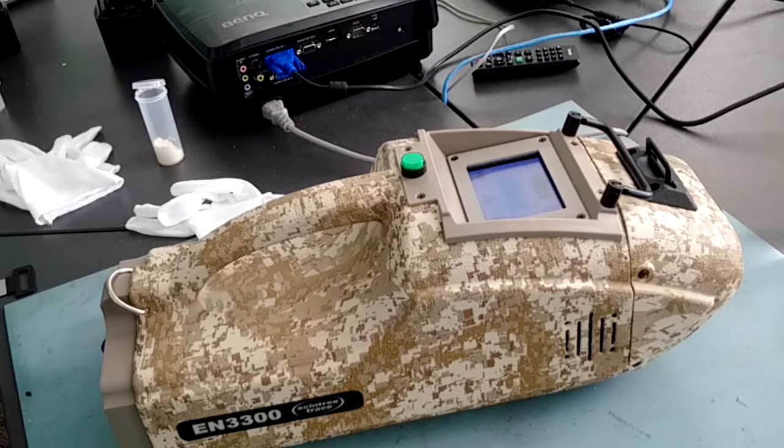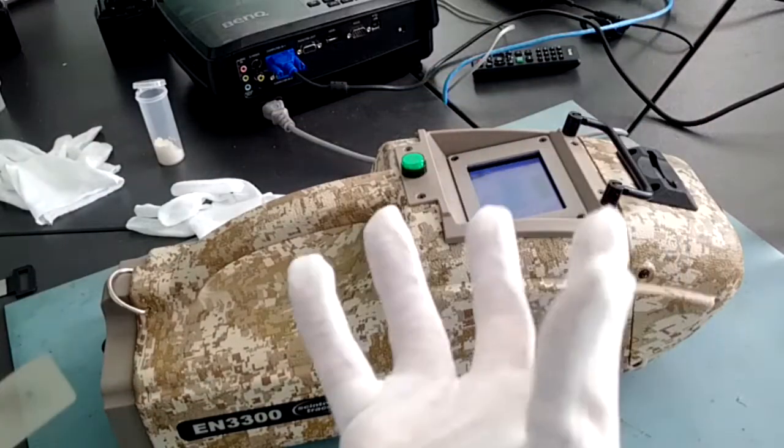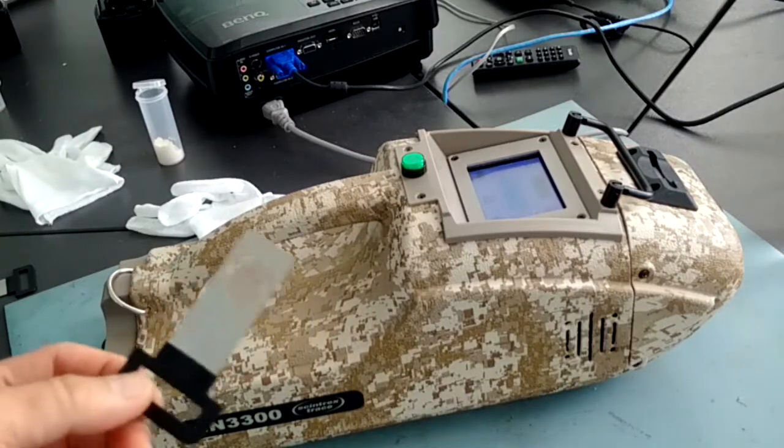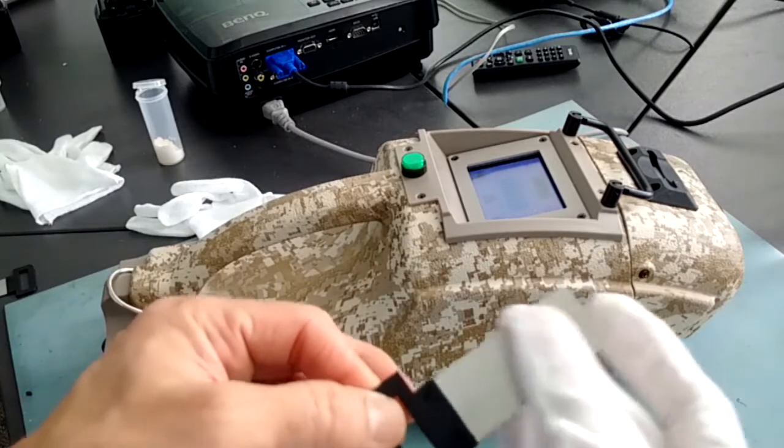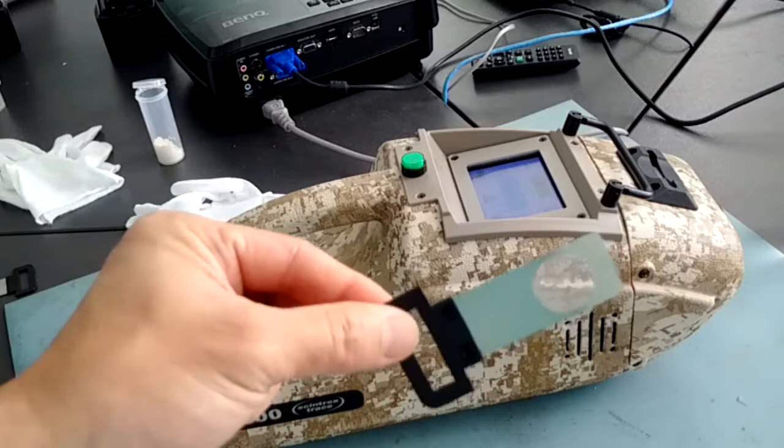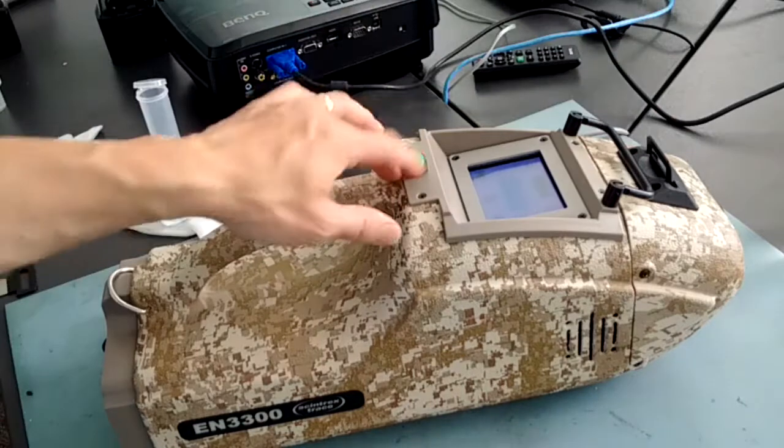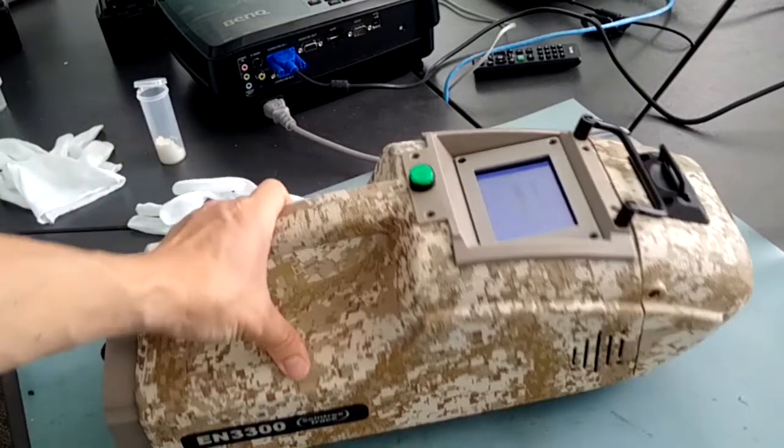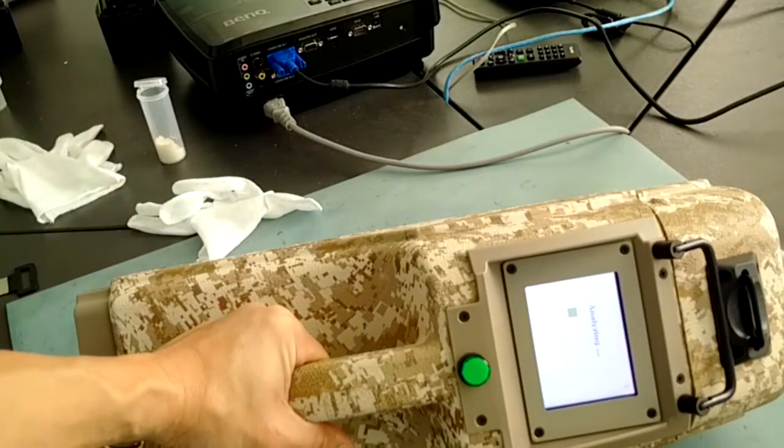One convenient way to collect samples, which is a very important aspect of the detector, is to use a glove or cotton swab and start collecting from surfaces, and then transferring the material onto the sampling screen, which is reusable. Just drop it inside the machine and start the analysis. The analysis time for the unit is about 10 seconds or less.